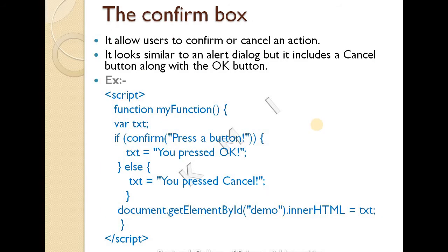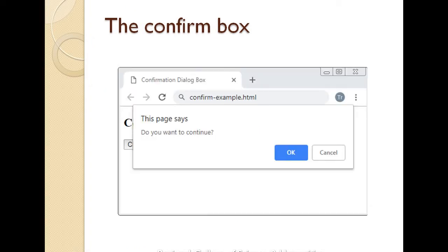The next is the confirm box. It is similar to the alert box, but it has both an OK button and a Cancel button, allowing users to confirm or cancel an action. For example, a prompt asks 'Do you want to continue?' — if the user clicks OK, it confirms; if Cancel, it cancels. You can change button behavior based on the option selected.